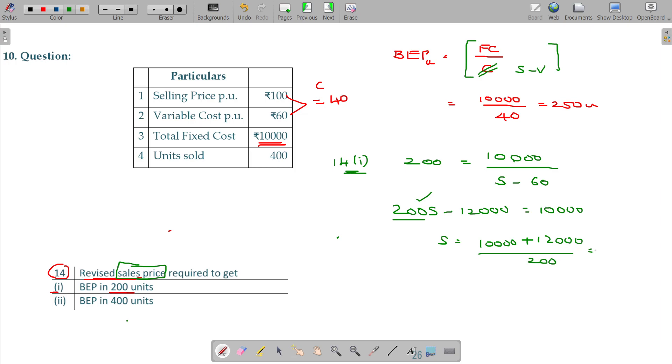What is the value? 110 rupees. At 110 rupees sale price, the contribution is 110 minus 60 equals 50 rupees. BEP in units equals fixed cost divided by contribution, so 10,000 divided by 50 equals 200 units.